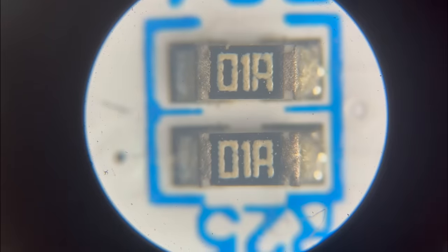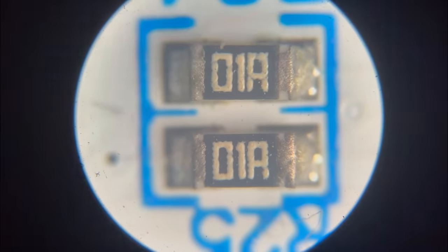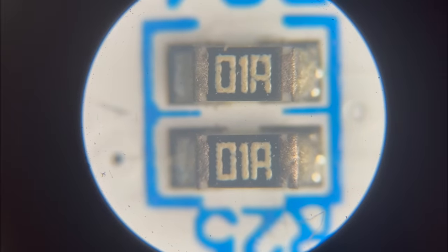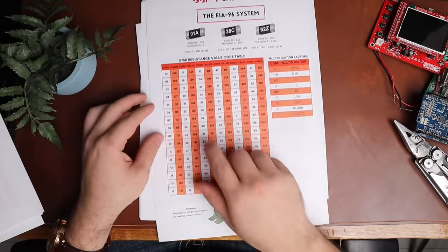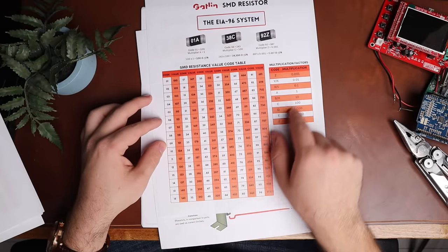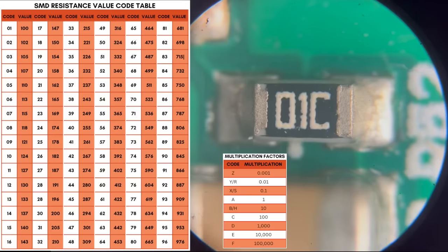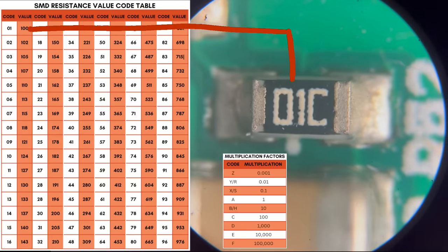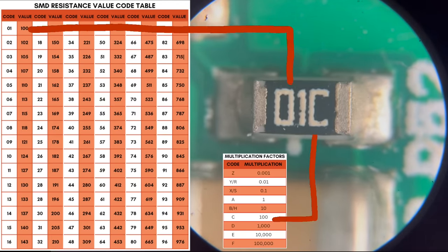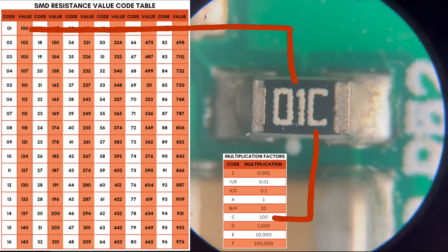The other common method is EIA96, which is more complicated, and requires either a very good memory, or a reference chart for the values like this. In this case, it's a simple matter of matching up the numbers. For example, a resistor that says 01C, you just match it with the code, in this case 01, meaning 100, and the letter C, in this case 100, meaning a 01C EIA96 SMD resistor is 10,000 ohms. And those three are the most common fixed value resistors.